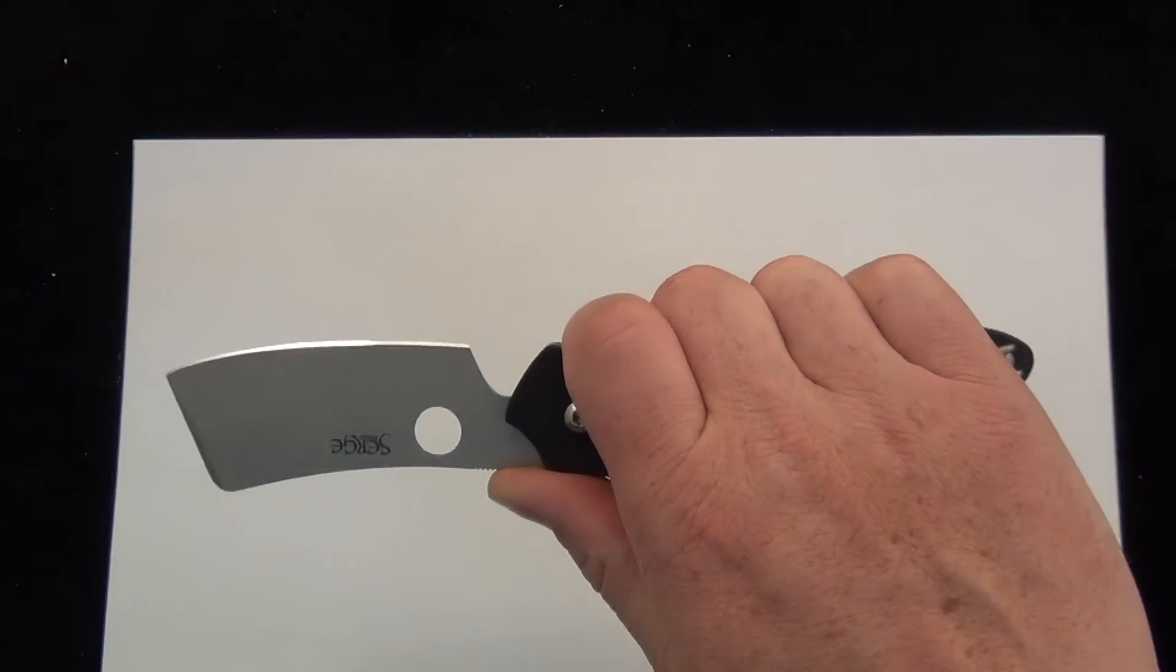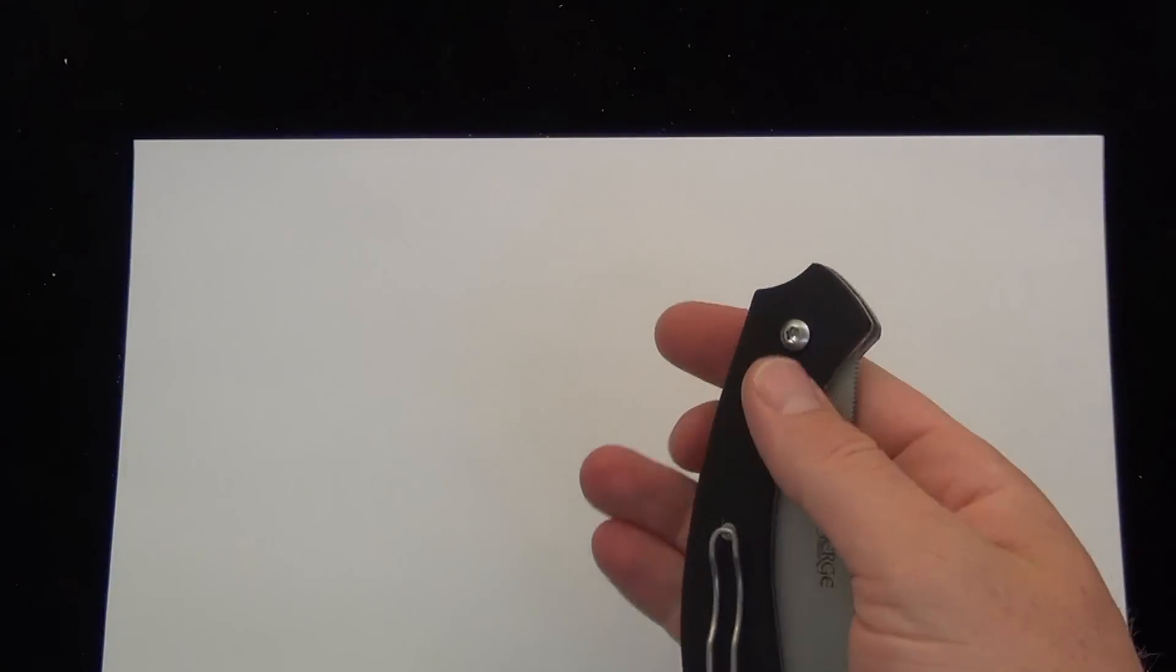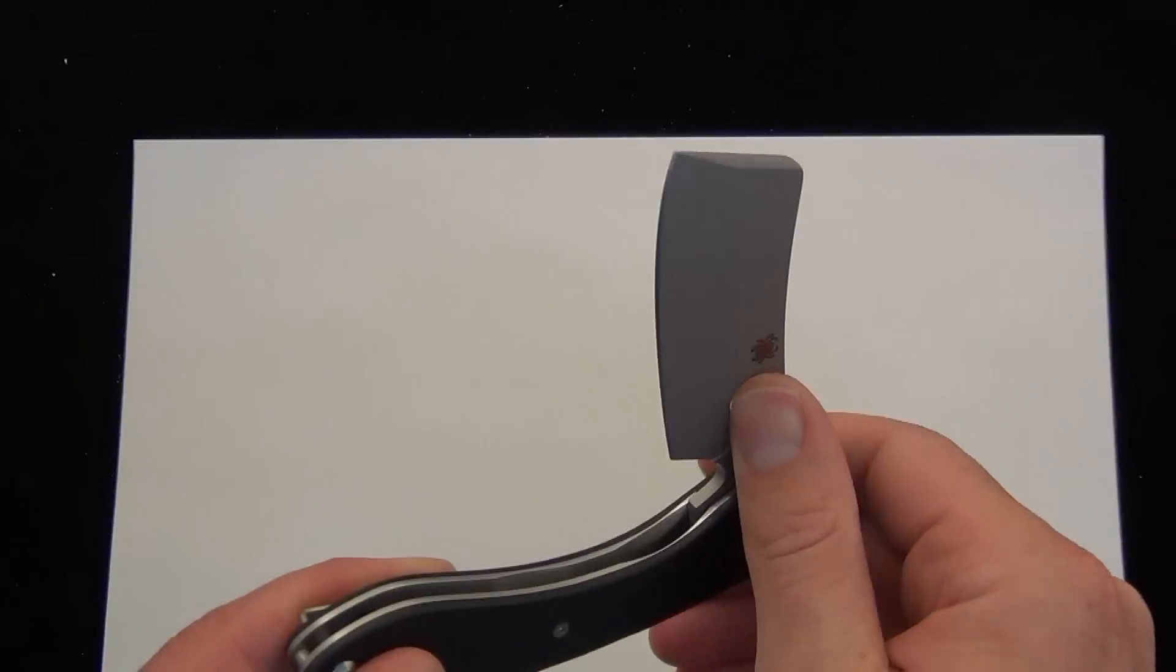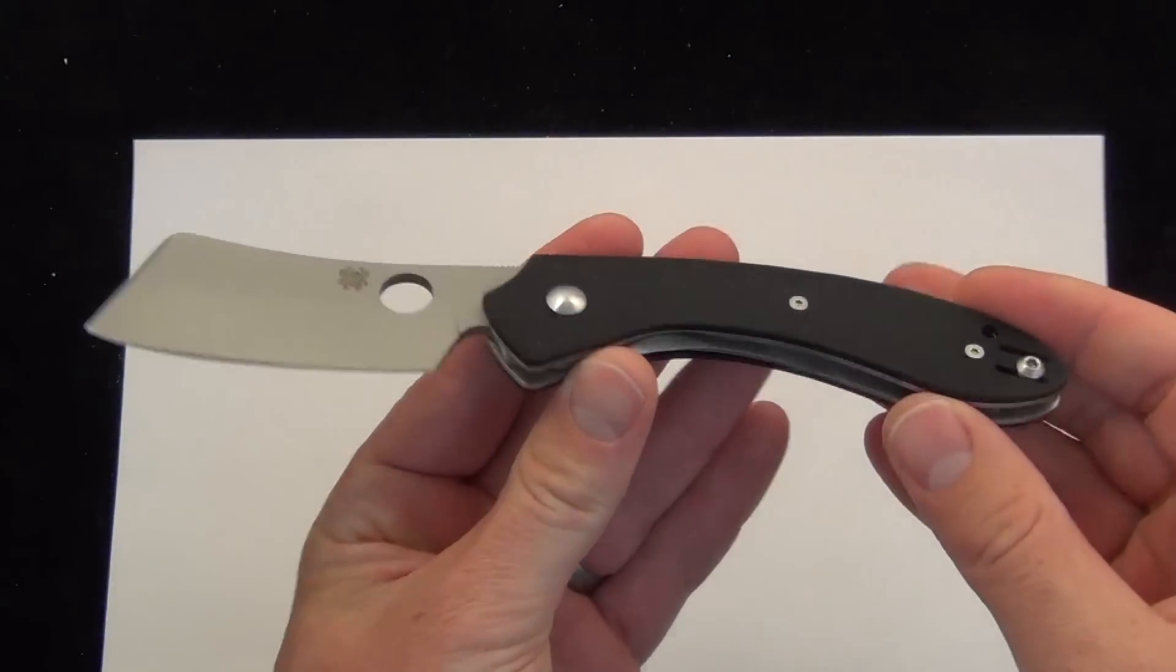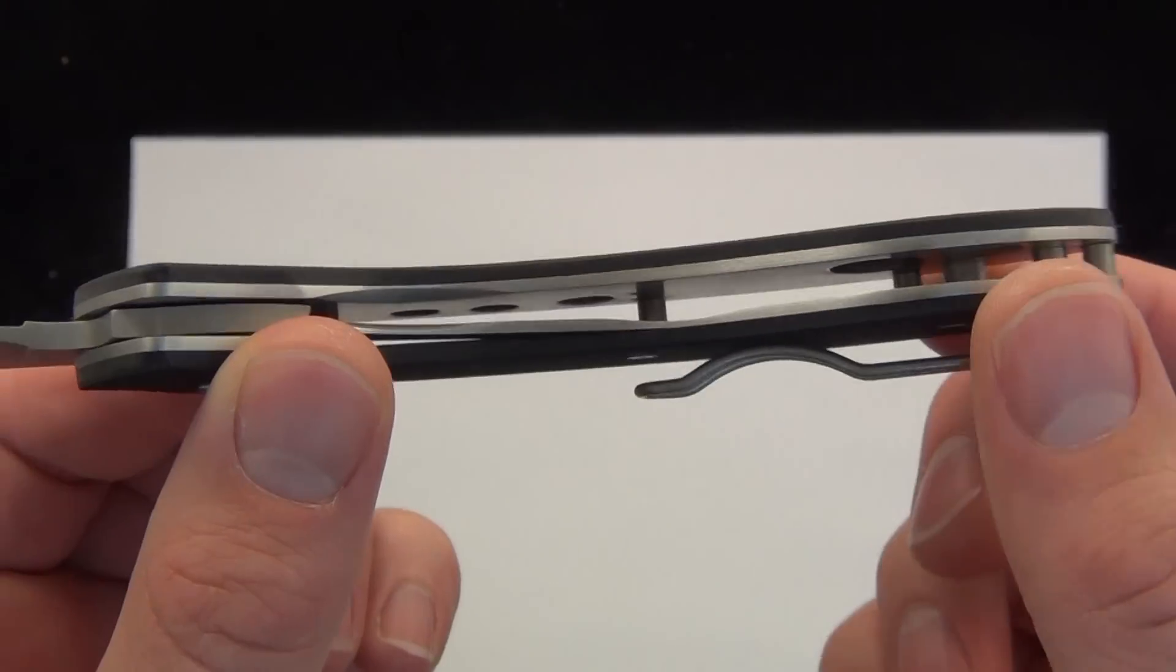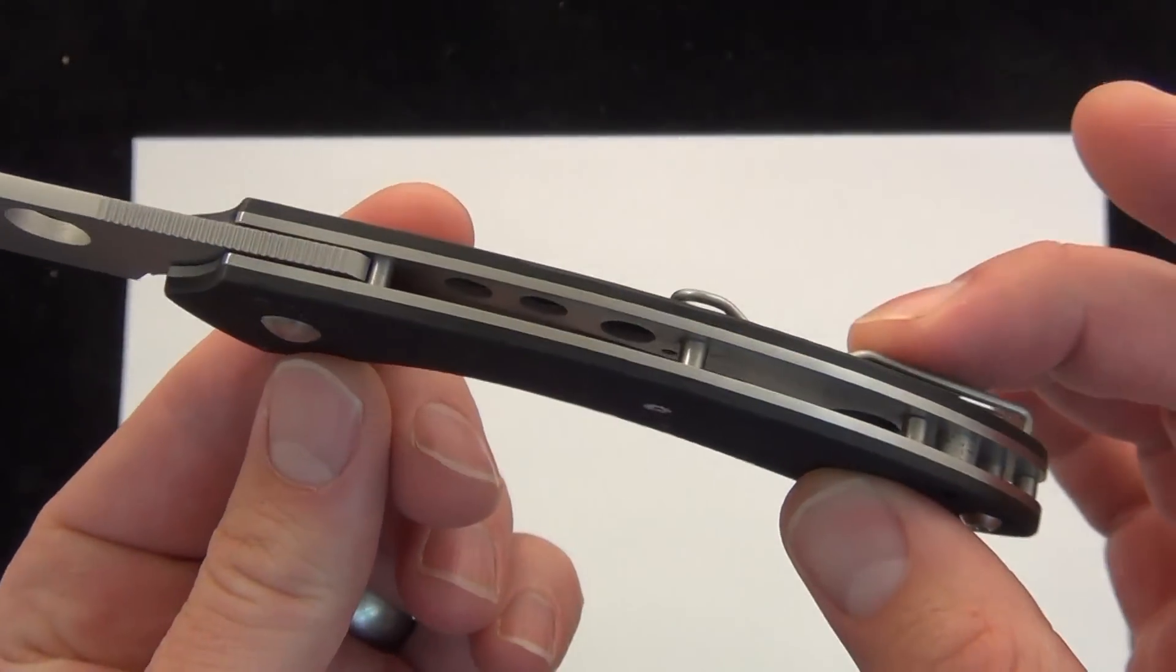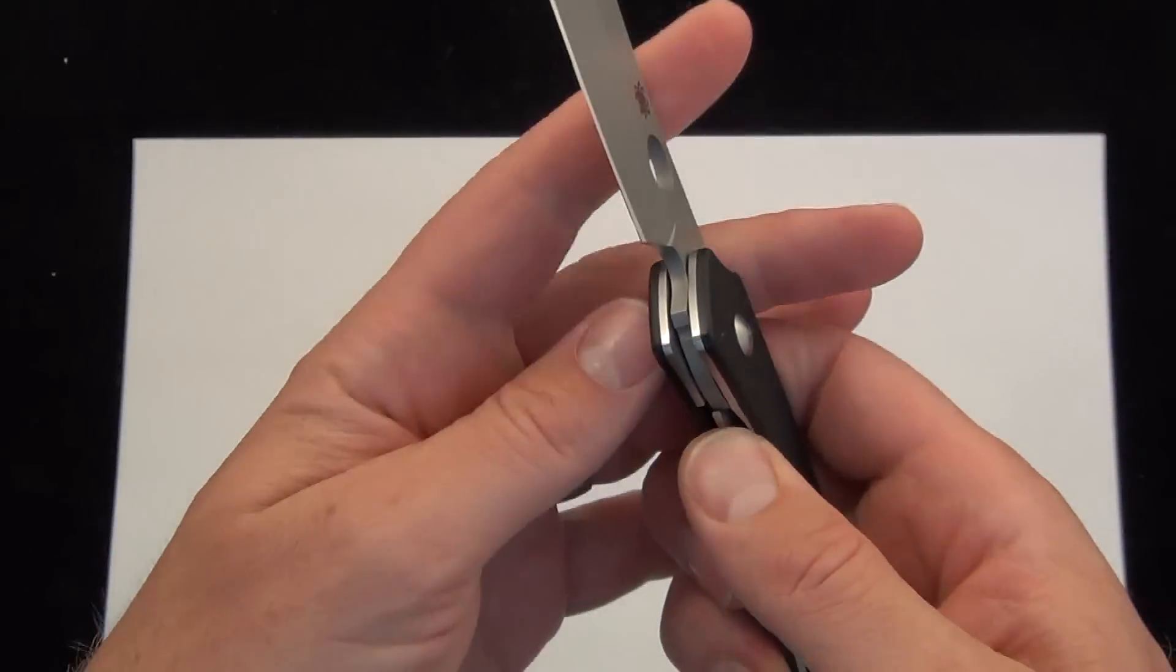There's a good look at it in my hand. As far as some quick specs, 3.07 inches of the VG10, bead blasted, and just under 8 inches overall. As far as construction, you have G10 on top of steel liners, they're slightly skeletonized, not a ton, creating 4.2 ounces.